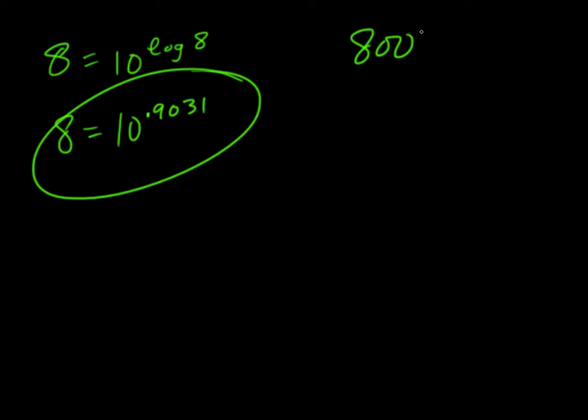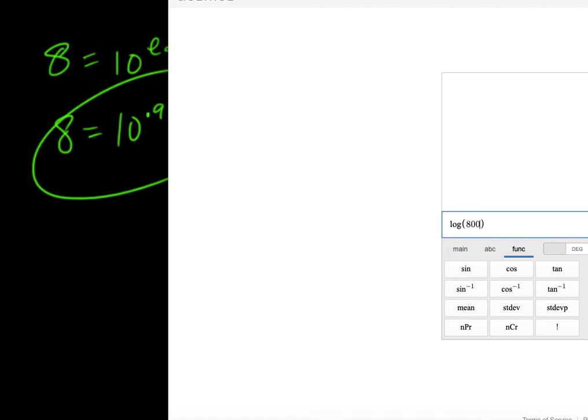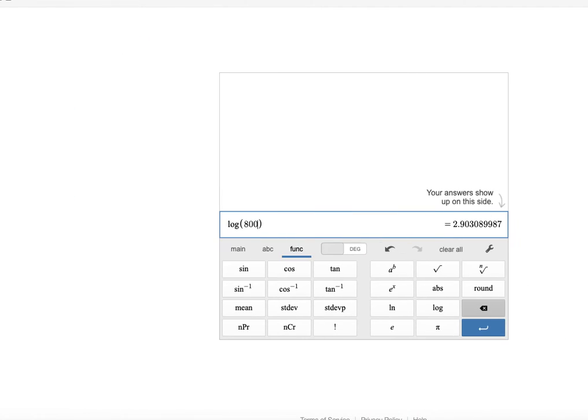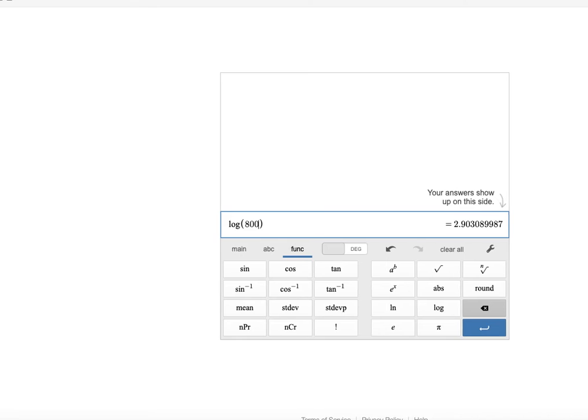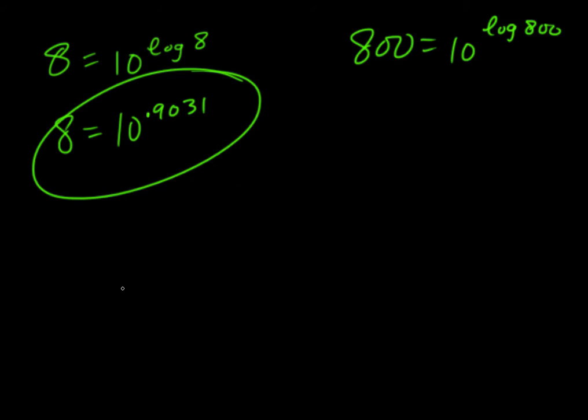Now we're going to try 800, which we would write as 10 to the log 800. Go over here, find out what log 800 is, and it's 2.9031.